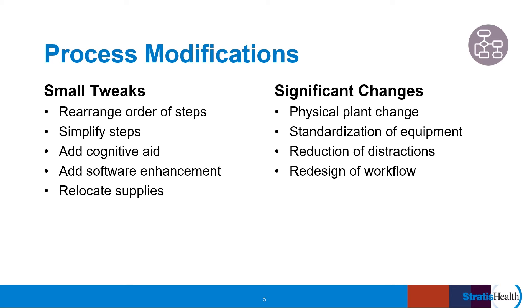Process modifications may involve tweaks to your existing process. For example, maybe you rearrange the order of steps or simplify steps to improve workflow, add a cognitive aid or a software enhancement, or keep the same process but relocate supplies to make it easier for folks to not skip steps. Or changes may be more complex and involve a physical plant change, standardization of equipment, reduction of distractions, or redesign of the workflow, such as moving from a paper system to a fully automated system. The end goal may be the same, but how the tasks will be executed is fundamentally different.